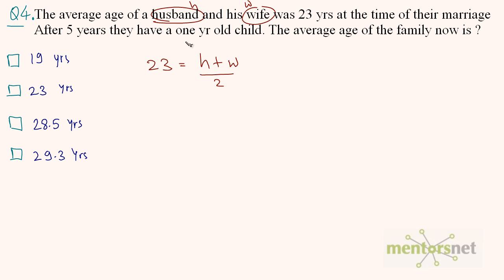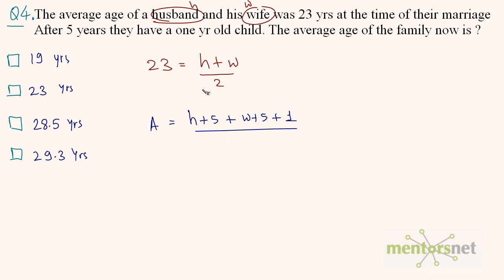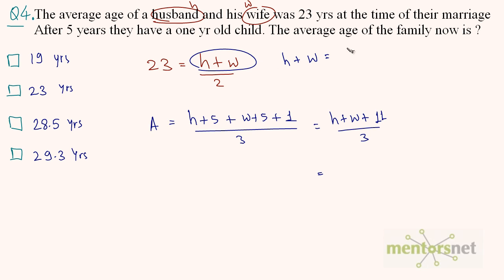After 5 years, they have a 1 year old child. The average age of the family is A equals H plus 5 plus W plus 5 plus 1, divided by 3 members. This equals H plus W plus 11, divided by 3. From the earlier equation, H plus W equals 23 times 2 which is 46. So A equals 46 plus 11 divided by 3, which is 57 divided by 3, equal to 19 years.